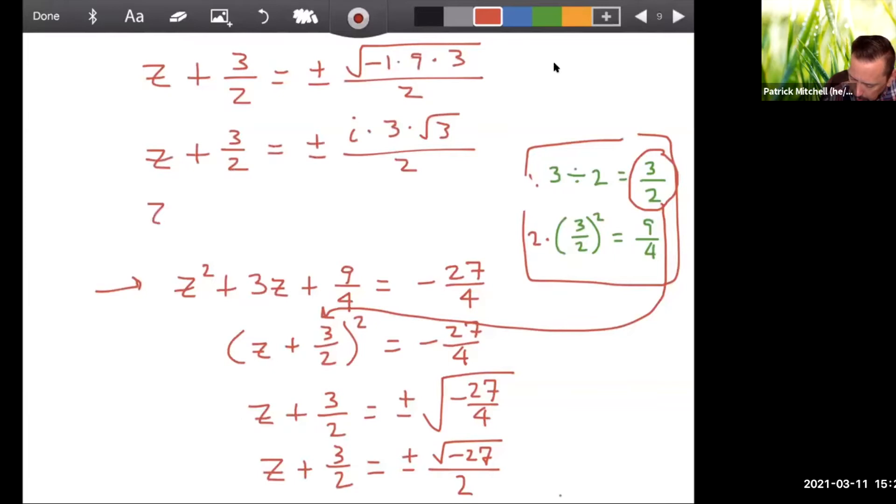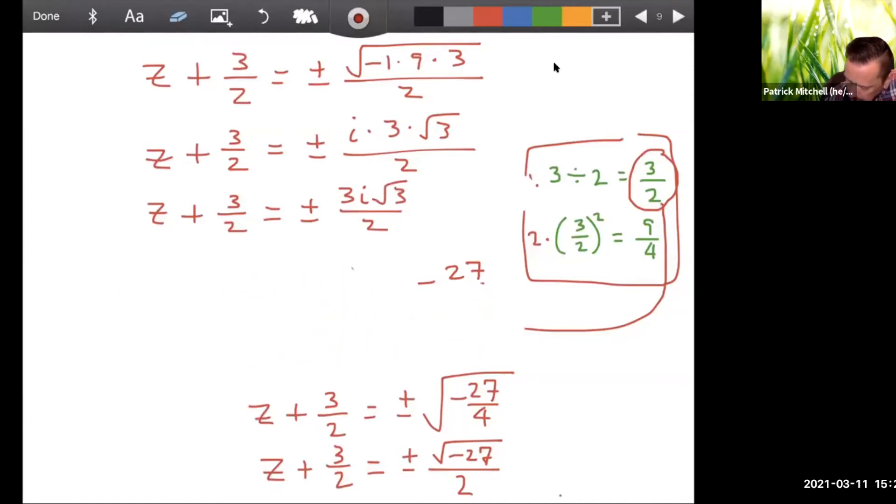Alright. So that gives you z plus 3 halves equals plus or minus 3i square root of 3 over 2. And if I make just a little bit more room, I can write my answer. So finally, I will subtract 3 halves from both sides. And that's going to give me z equals negative 3 halves plus or minus 3i radical 3 over 2. And again, if you're typing this in your online homework, you would type two answers, one with the plus and one with the minus.